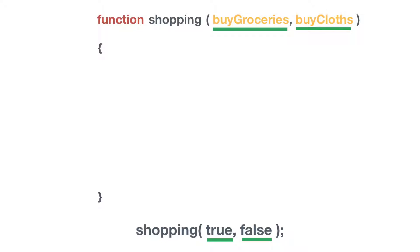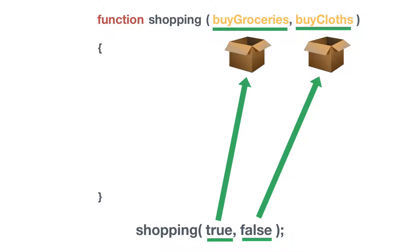Think of the parameters as empty boxes. And the arguments are the values that go in to the empty boxes. And for example I can have the parameter buy groceries or buy clothes. So now I have two parameters, two empty boxes and we need to give these values. For example I can say true to buying groceries and false to buying clothes.